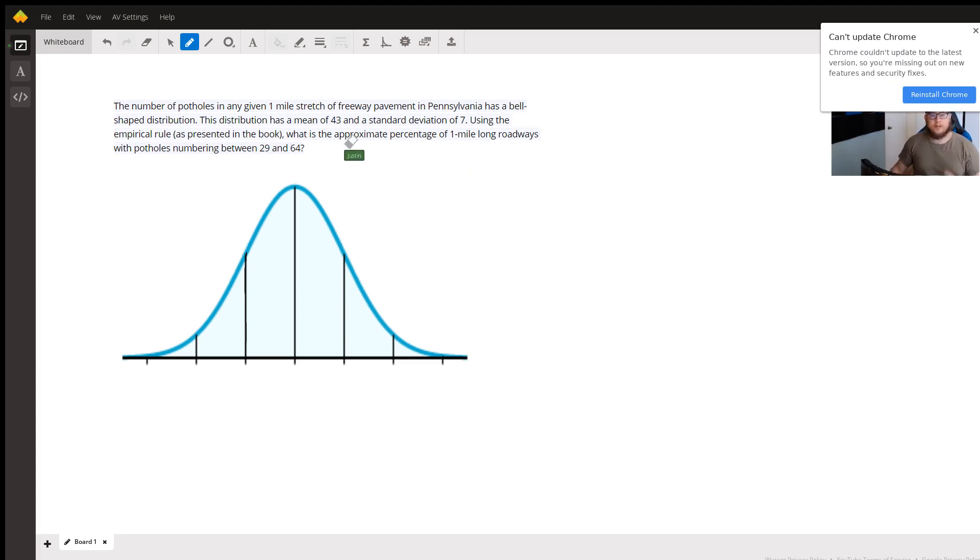So the empirical rule, which is also known as the 68, 95, 99.7 rule, tells us that as long as we have a normal distribution, this will behave pretty predictably.